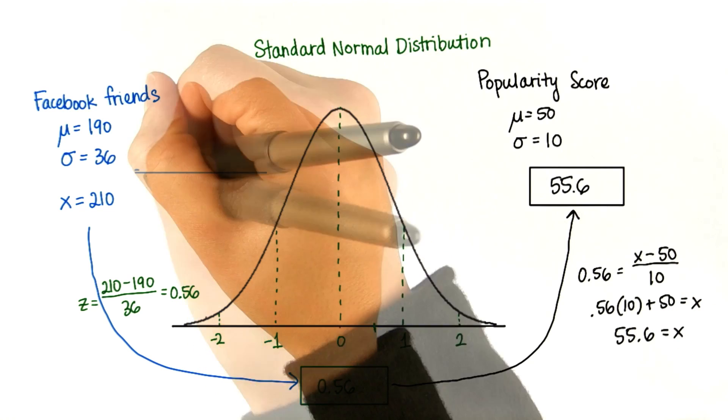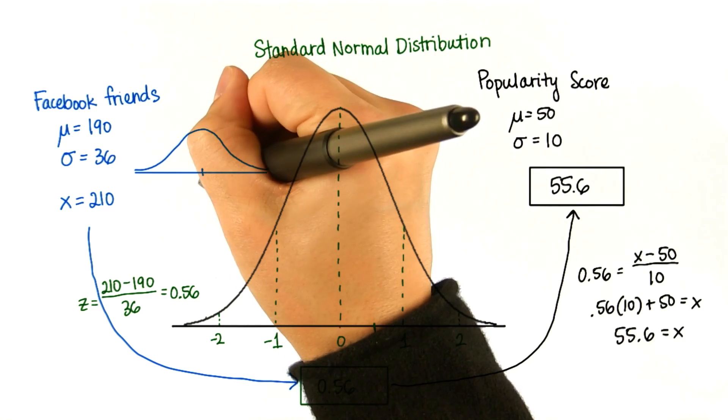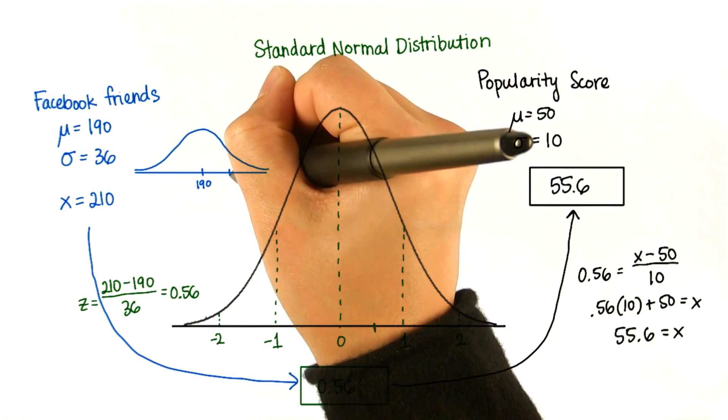Basically what we did is we took a pretty spread out distribution with mean 190 and standard deviation 36.